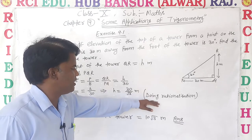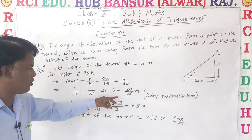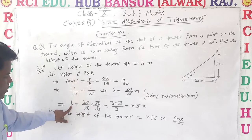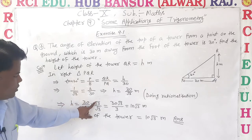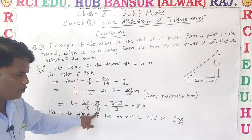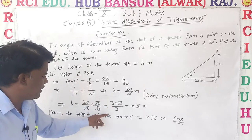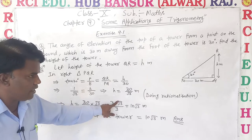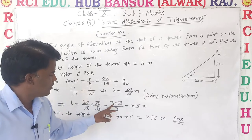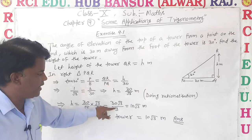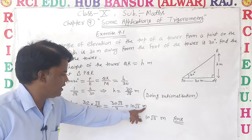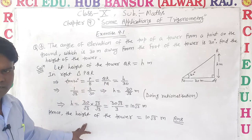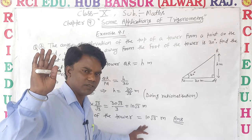To remove the root from the denominator, we do rationalization. In rationalization, we multiply and divide by the same value — root 3. So h equals 30 multiplied by root 3 upon root 3 into root 3, which is 3. That gives 30 root 3 upon 3, and dividing gives 10 root 3 meters. Hence, the height of the tower is 10√3 meters.